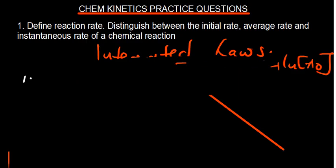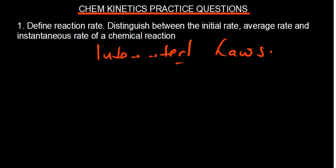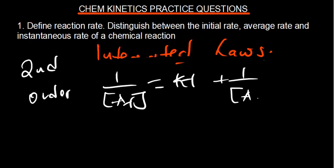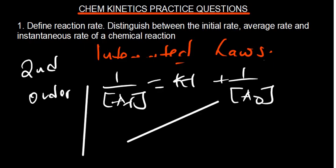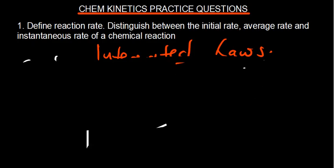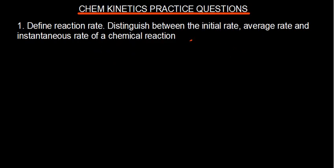For a second order reaction, instead of the natural log, we use the reciprocal of the concentration — 1/[A] versus time. Here the gradient is positive, so the graph trends upward. To determine order, try plotting concentration as-is (zero order), then ln[concentration] (first order), then 1/[concentration] (second order), and a positive gradient confirms second order.